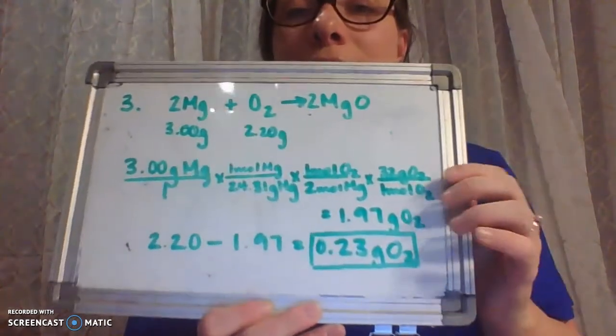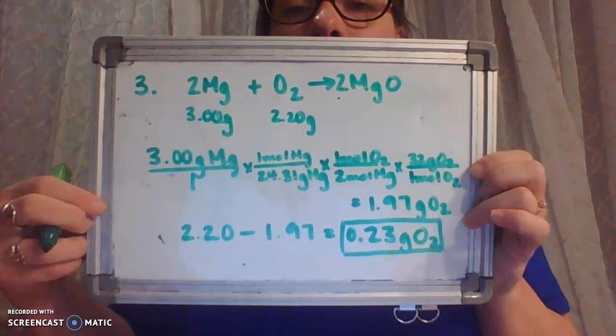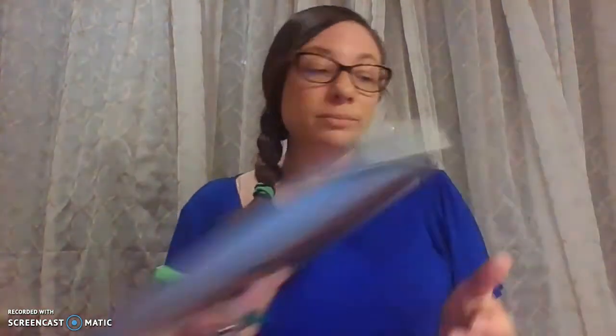We got that by taking the given amount and subtracting the amount used up — the difference is what's left over: 0.23 grams of oxygen. That's the first part of this problem. Now the other part asks what mass of magnesium oxide is formed. To solve this, remember that magnesium is our limiting reactant — there's going to be oxygen left over, so the magnesium controls how much product is formed, and that's where we start our calculation.